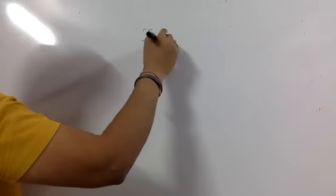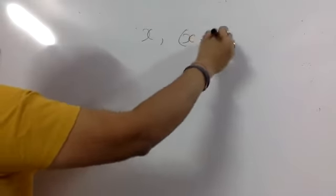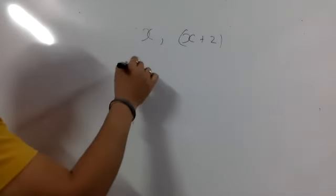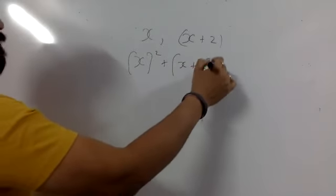Next. A quartet industry produces certain number of pottery articles in a day. Next. Find two consecutive odd positive integers. The sum of their squares is 290.